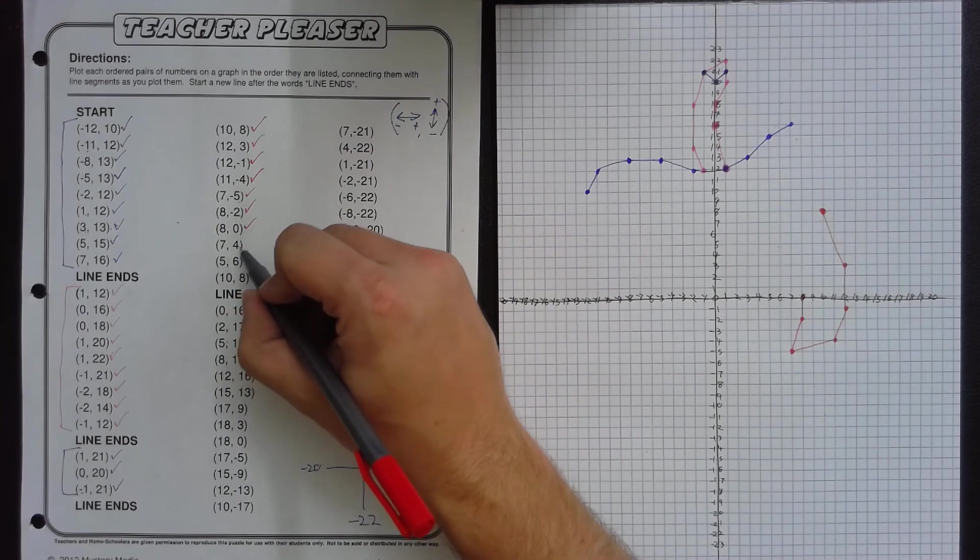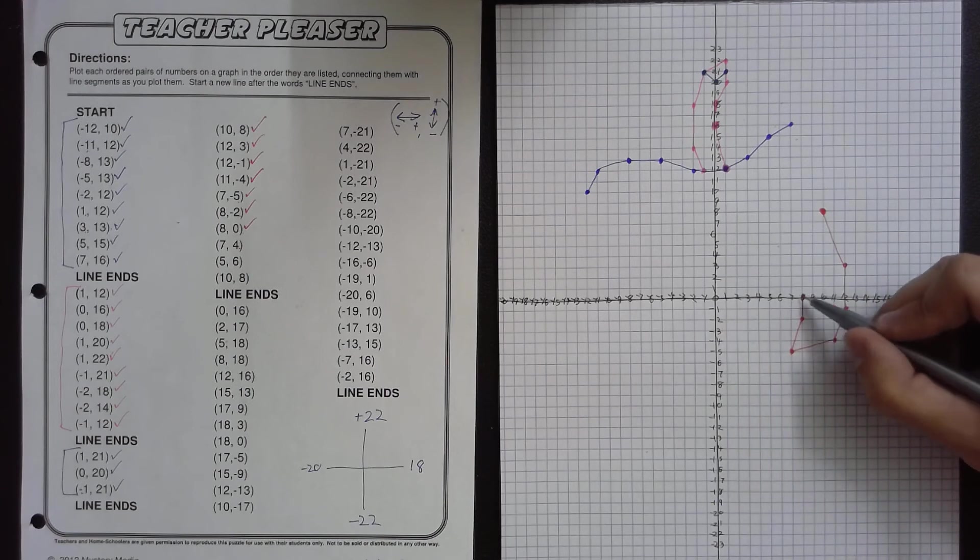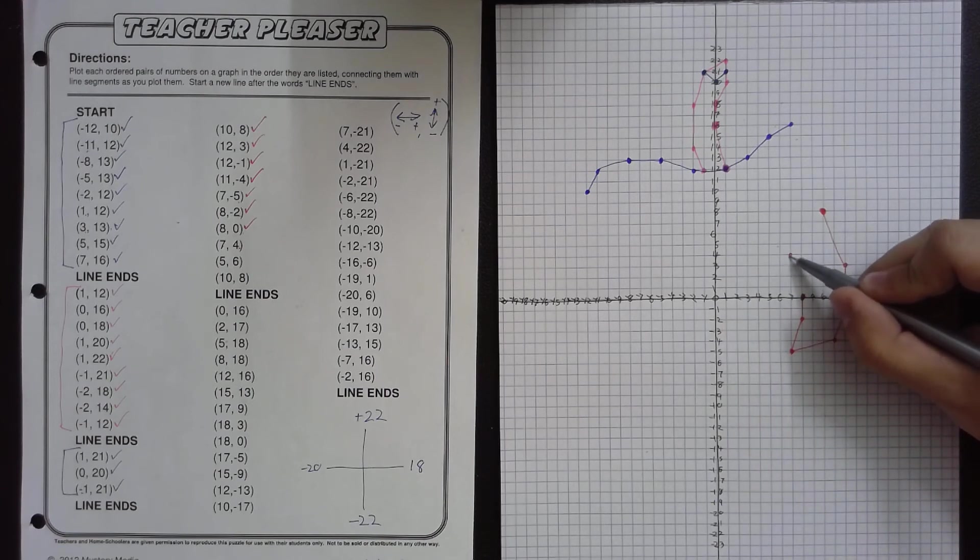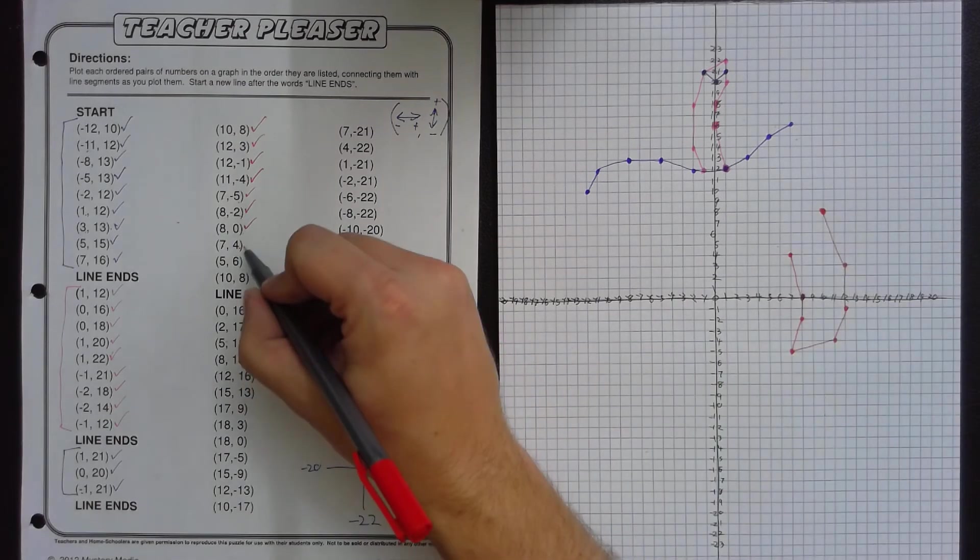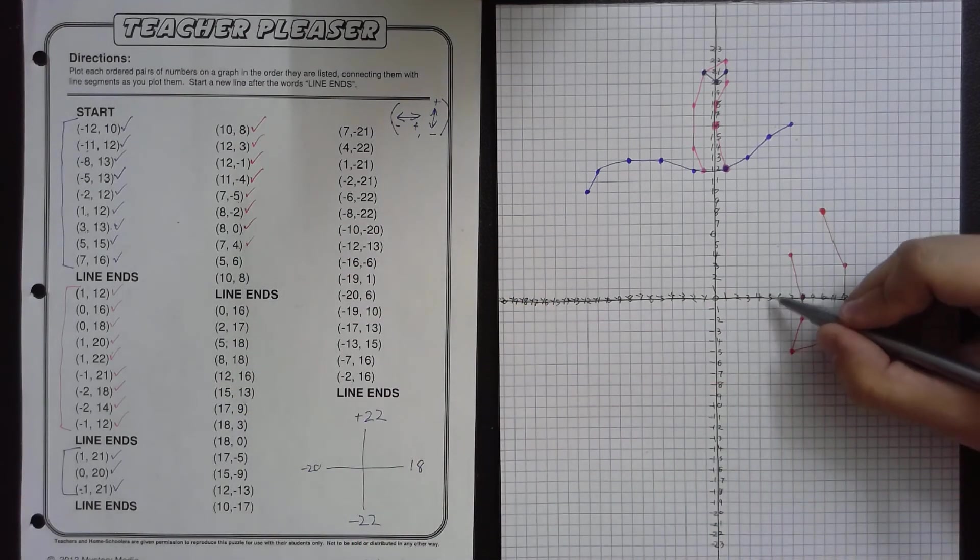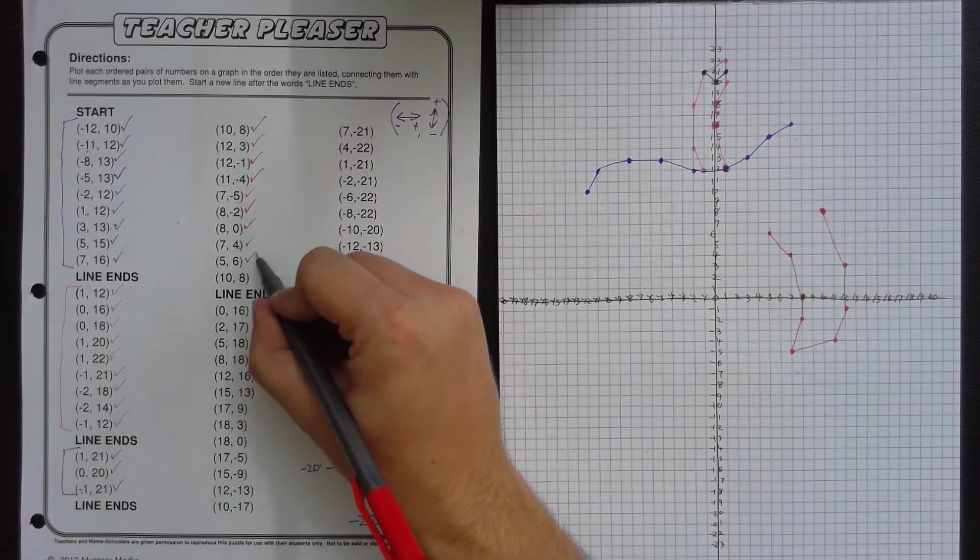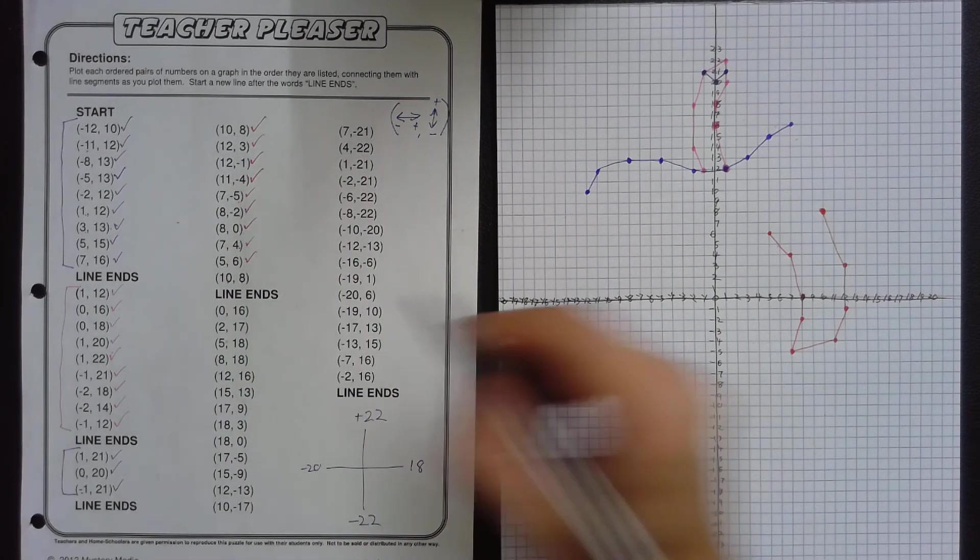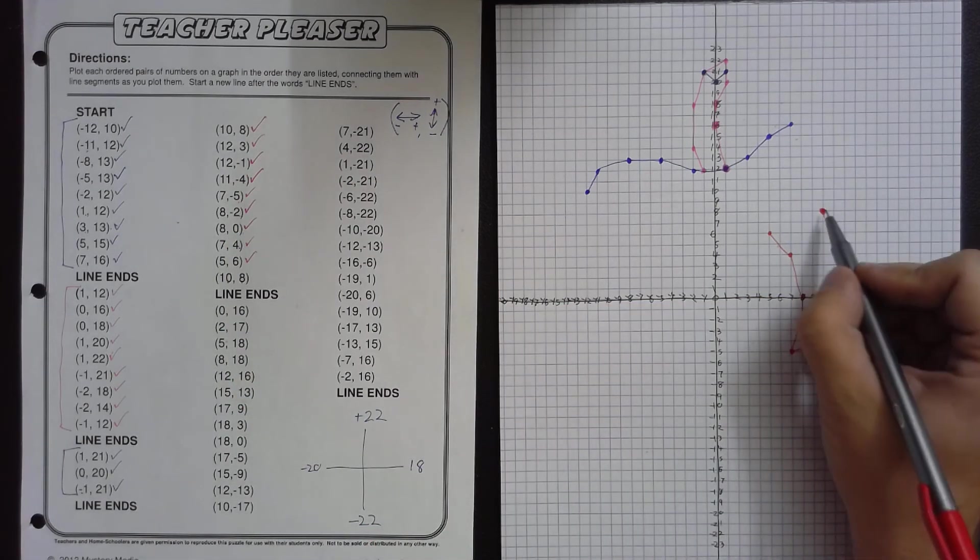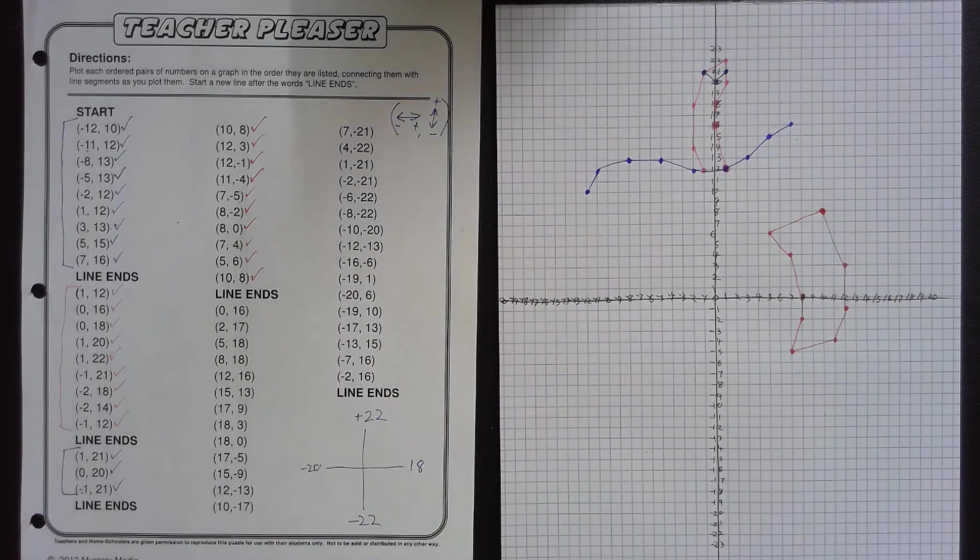After that is 7, 4. So back to positive, positive. So we go to the right and then up. Right here. We'll connect those two. Then we have 5, 6. So 5 to the right and 6 up. Right here. And the last one of this sequence is 10, 8, which is where we started. So we redraw and reconnect. And that's it for this sequence.